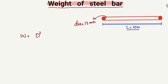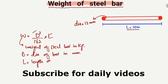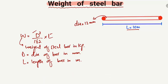The formula used to find the weight of the steel bar is: W = D² / 162 × L. Here, W is the weight of the steel bar in kilograms, D is the diameter of the bar in millimeters, and L is the length of the bar in meters. Keep in mind this formula is only valid when diameter is in millimeters and length is in meters.